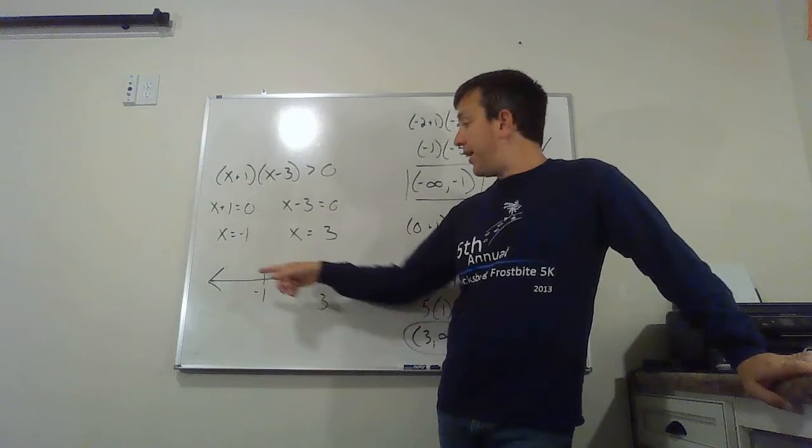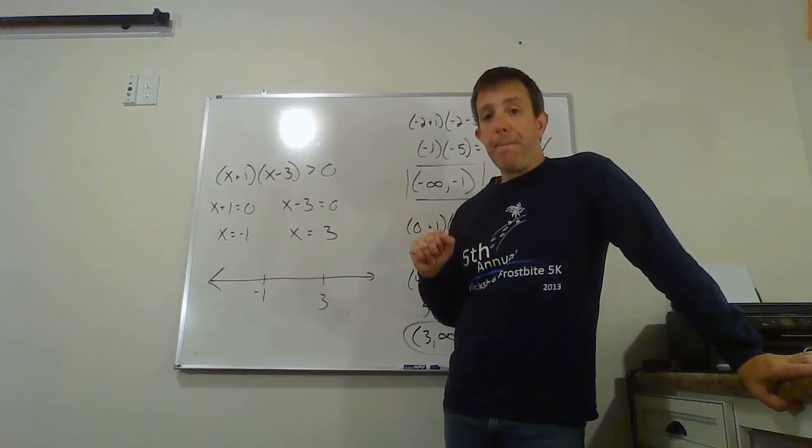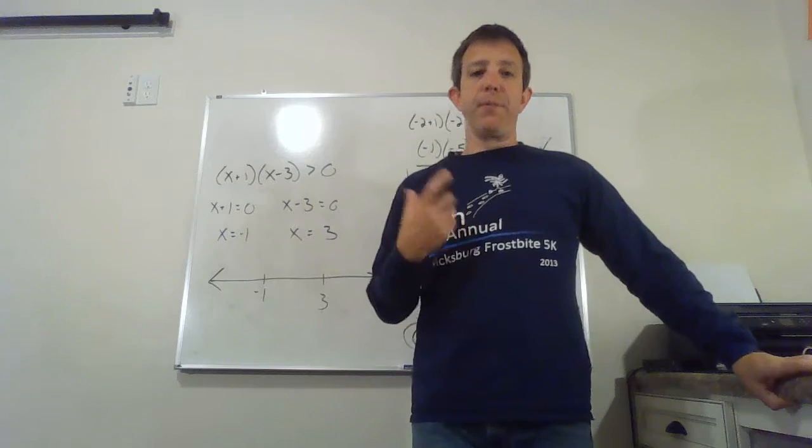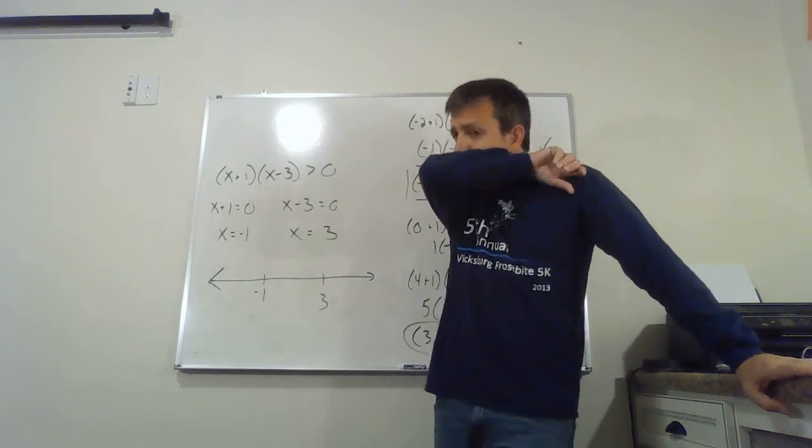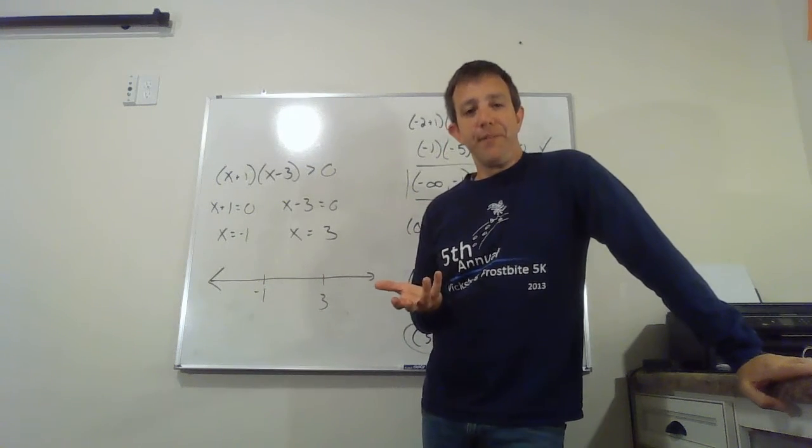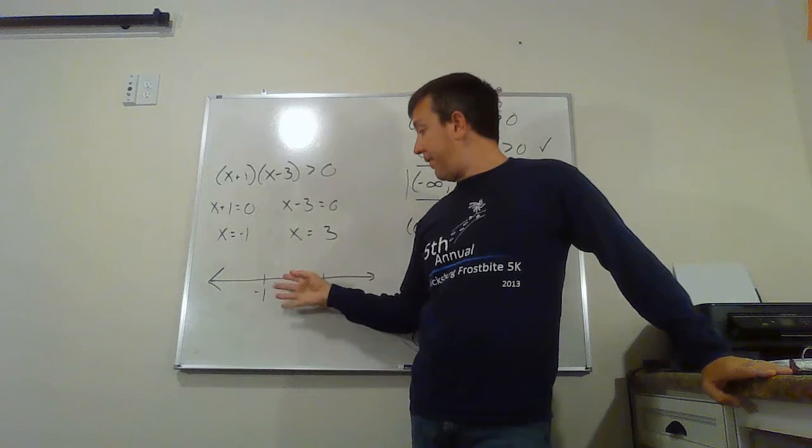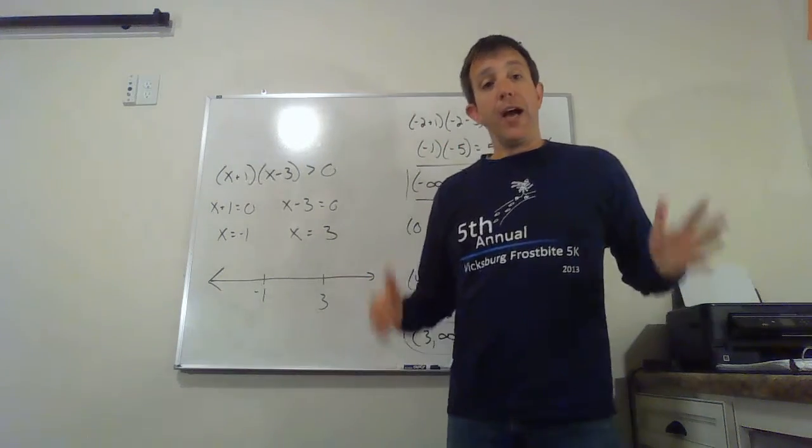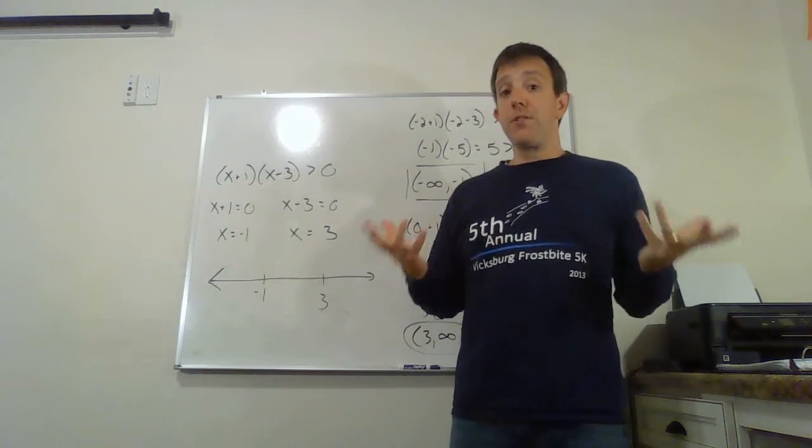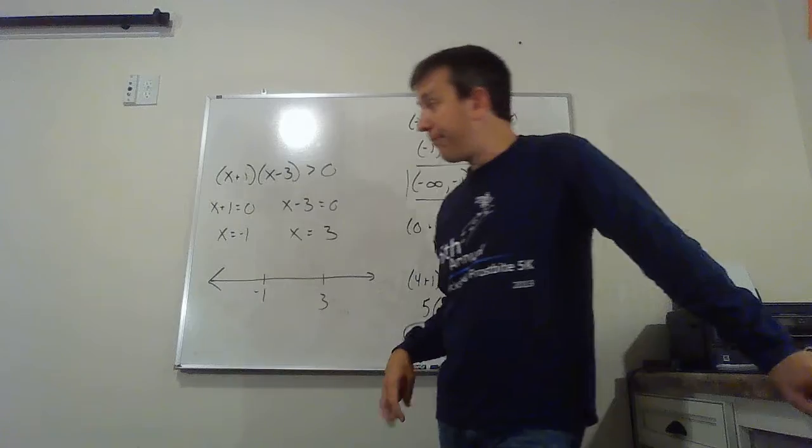I drew a quick number line down here at the bottom. I labeled on it negative one and three. So we can see here is where we had our zeros. Keep in mind that image from the previous board - we have a parabola that's going to cross the x-axis at those two points. We just need to know where it's positive and negative. So I have three intervals here. I have everything to the left of negative one, everything in between negative one and three, and out to the right of three. I'm just going to test those intervals and see what happens.